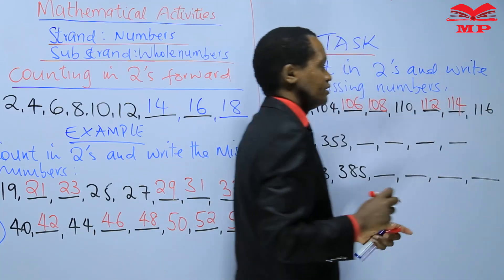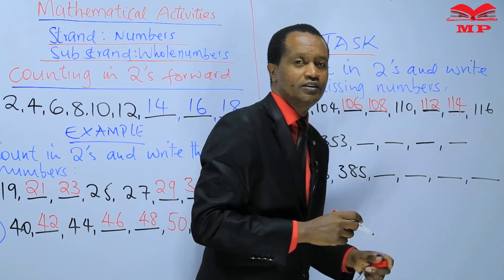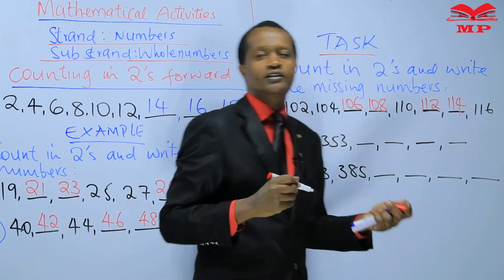From 112, the next number is missing: 112, 113, 114 — so we write 114. Did you get the answers correct? You can tick.